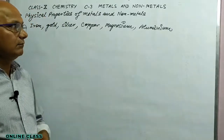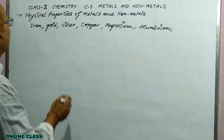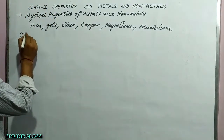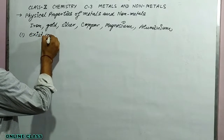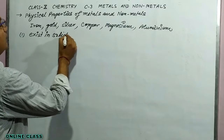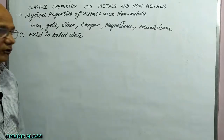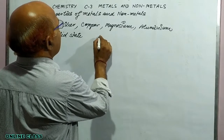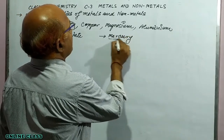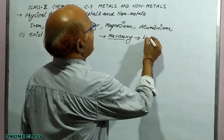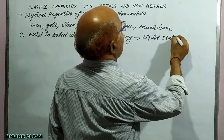Generally, metals exist in solid state. Mostly the metals exist in solid state, but there is one exception — that is mercury. This metal exists in liquid state at room temperature.